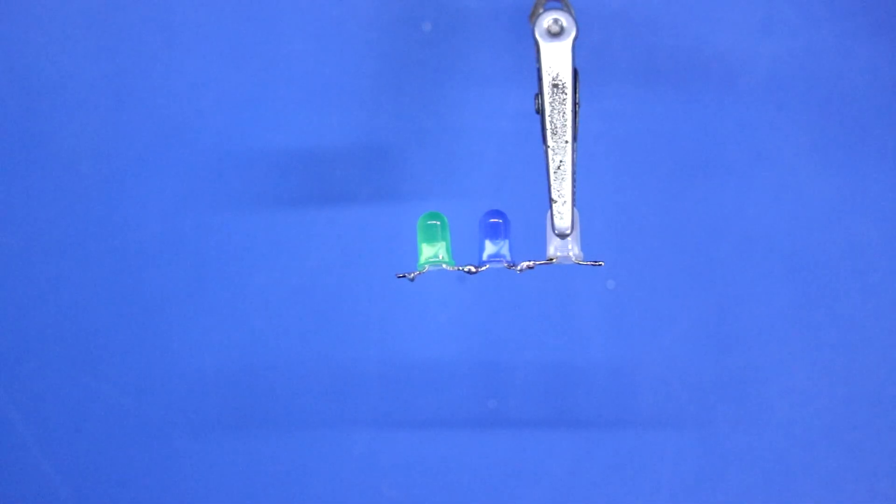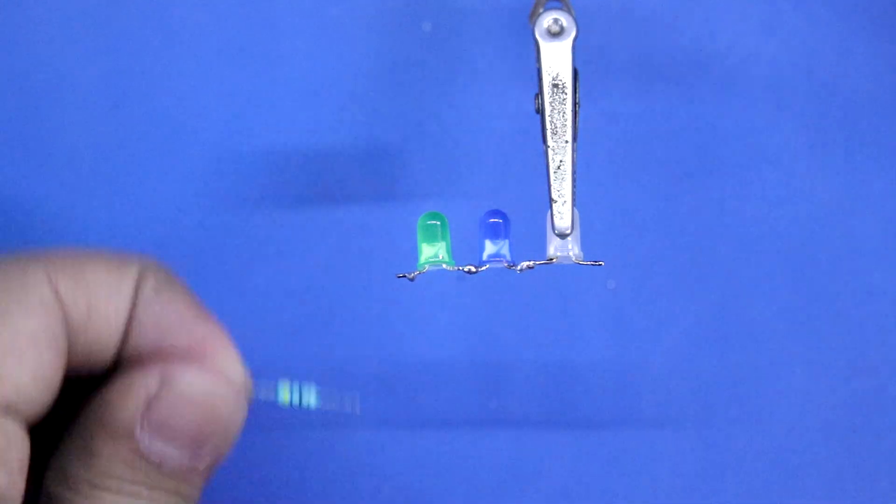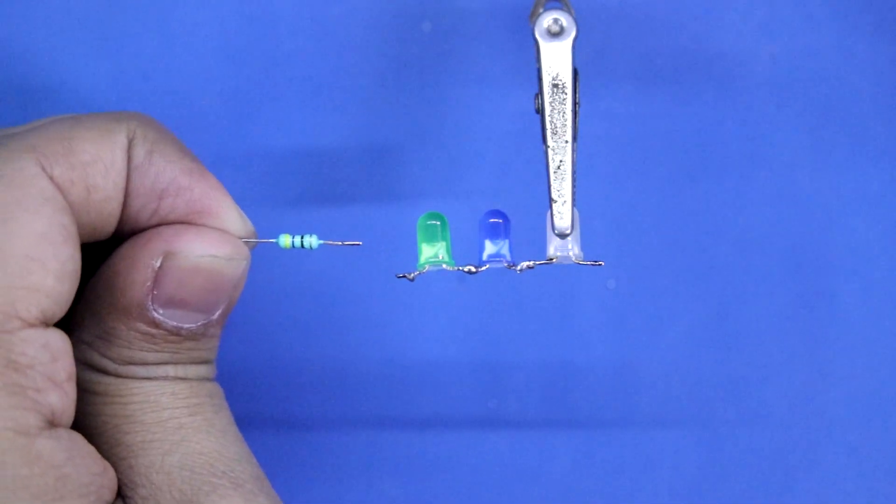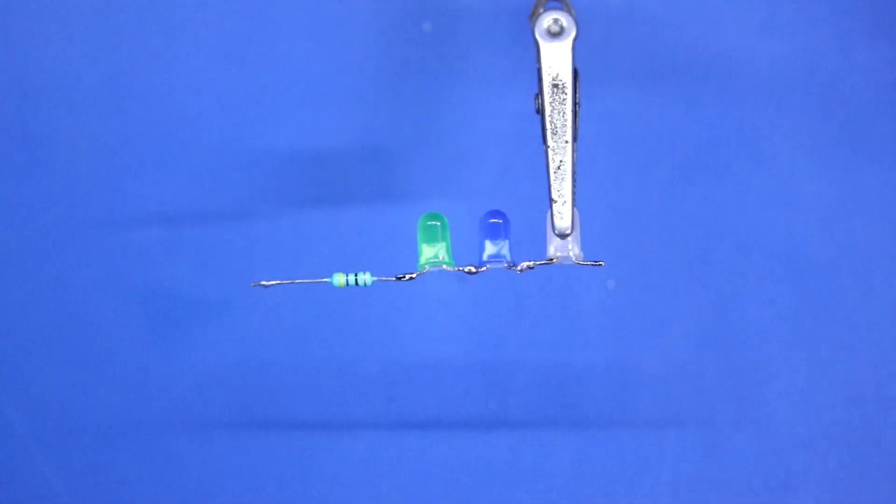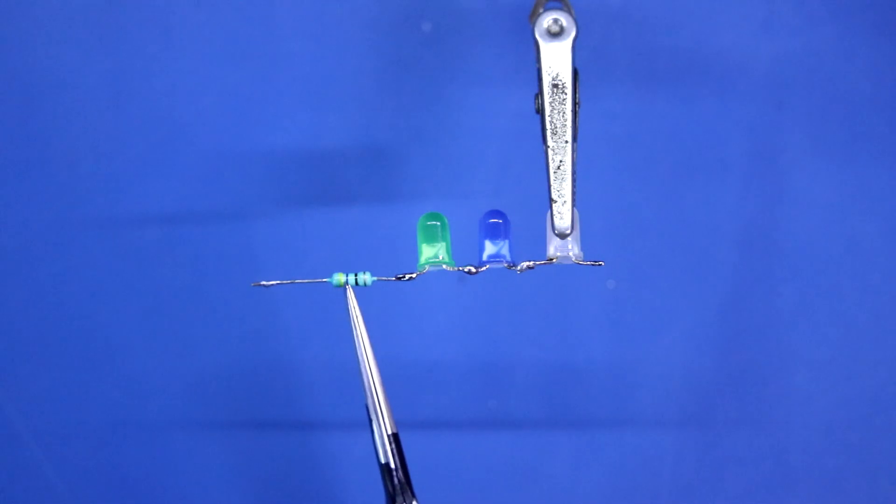Now we have to connect 470 ohm resistor to this pin. This is positive and this side is negative. With the negative pin we have to connect the resistor.